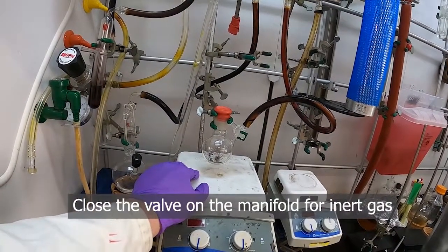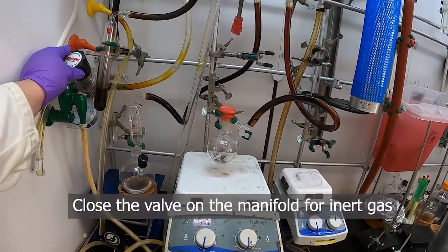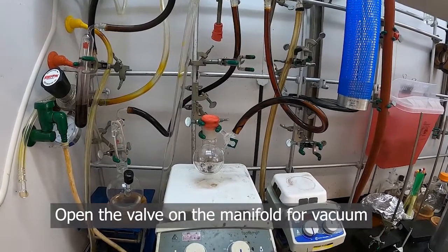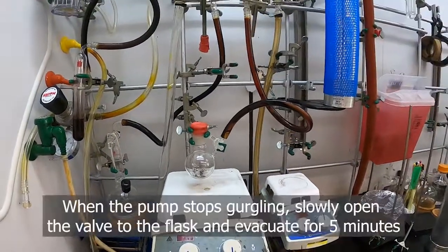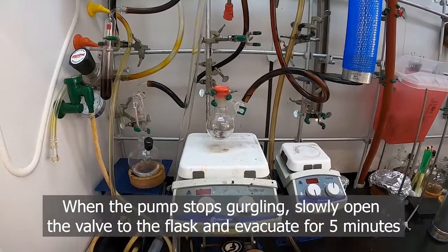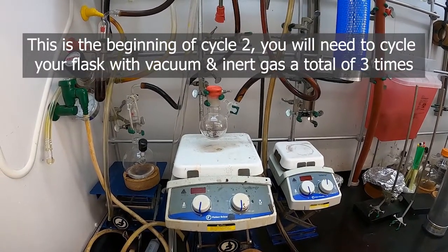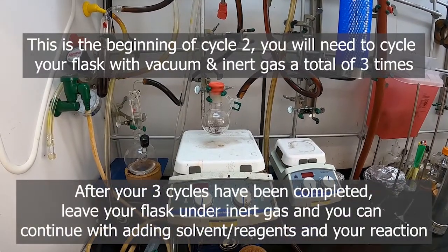Turn off the nitrogen. Open the vacuum. And just repeat like before. And then we want to pull a vacuum on that three times, and then at the very end, leave it under nitrogen to be used for the next step.